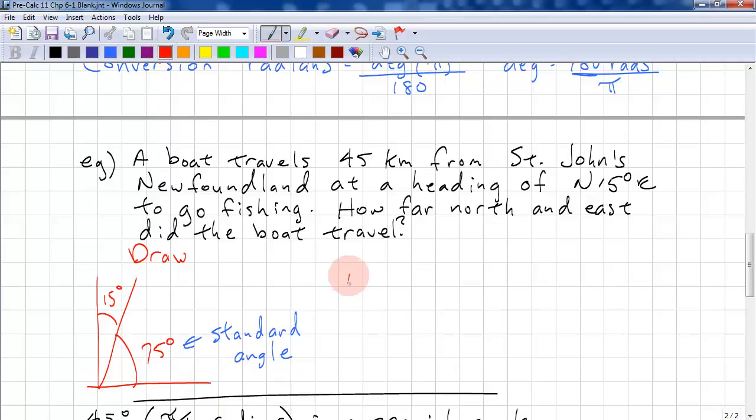So, north is our y value. This is 45 kilometers times sine 75 degrees. And east is 45 kilometers times cosine 75 degrees.